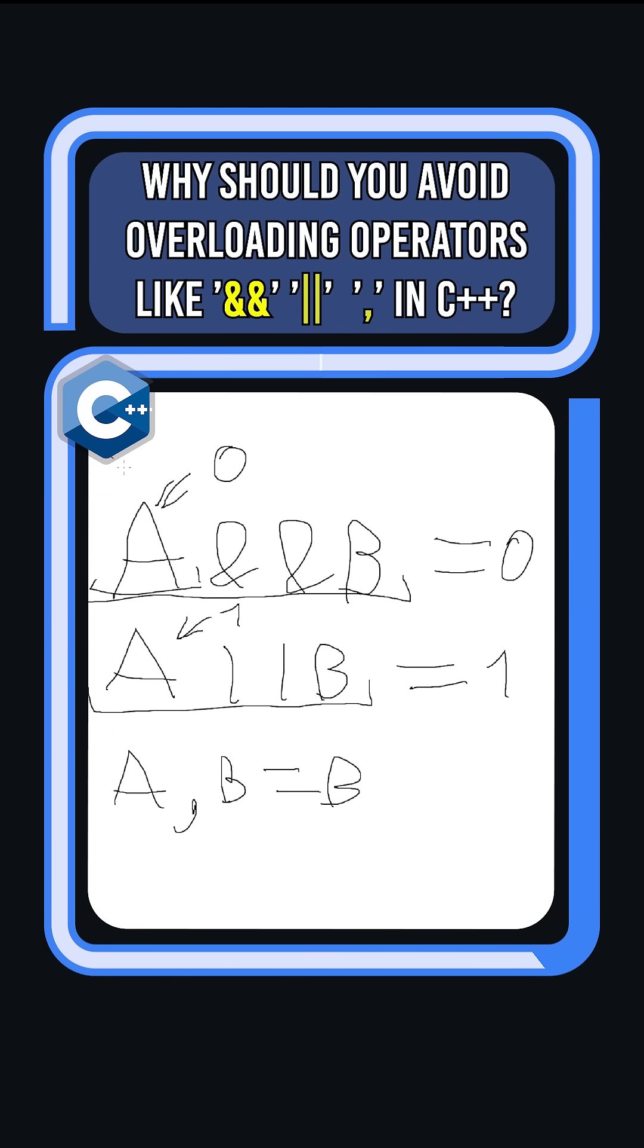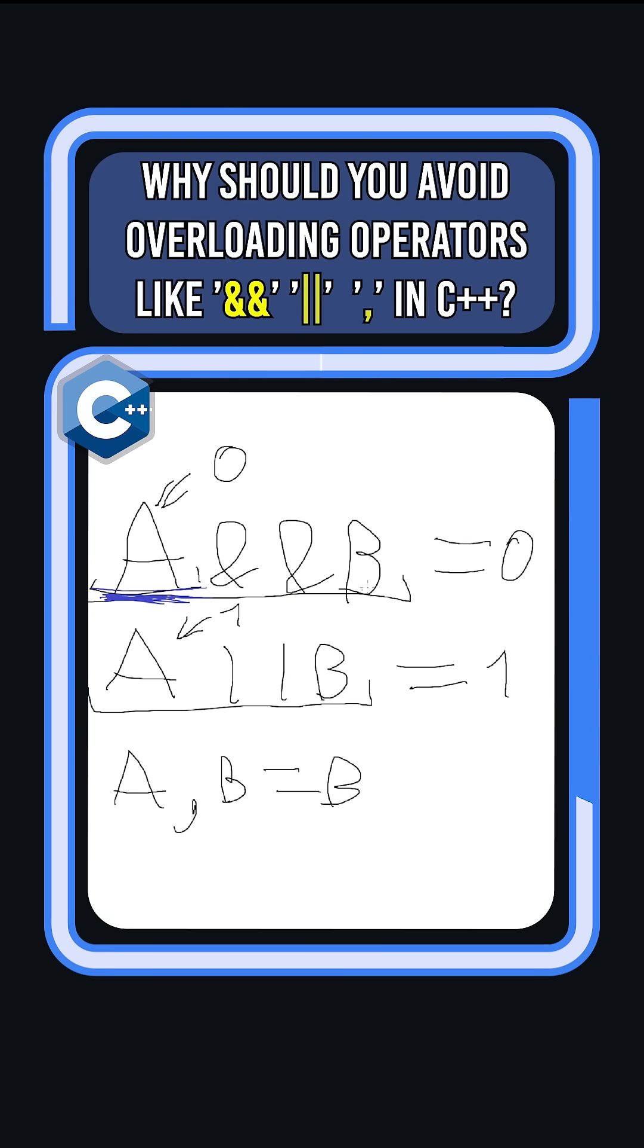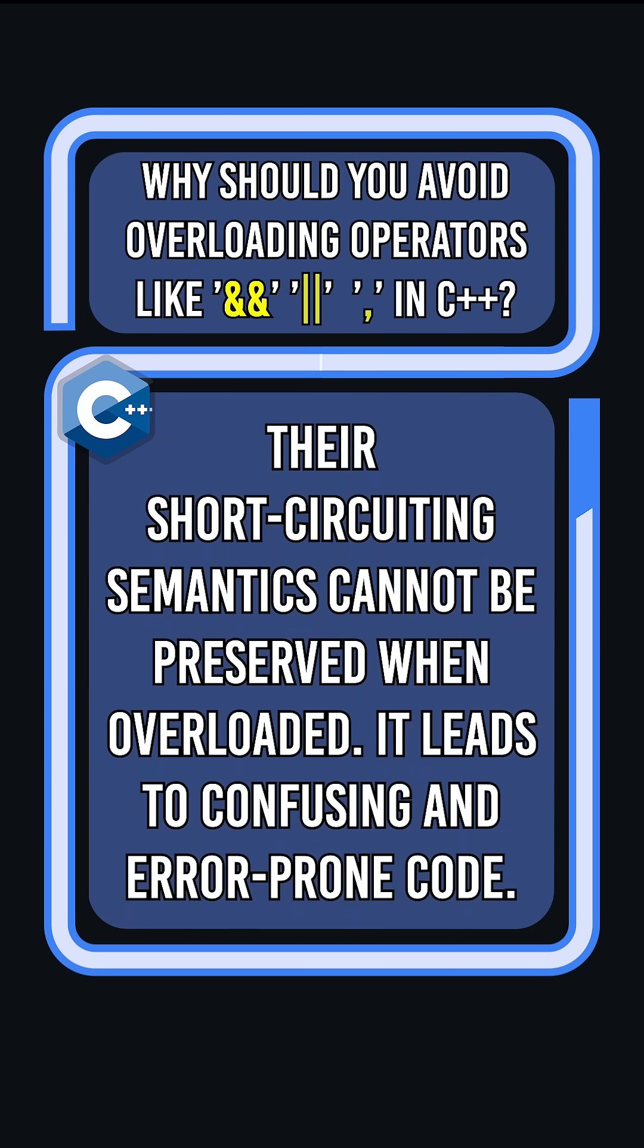But when we overload them, they are being processed like a function call. Left operand A and right operand B will be evaluated, losing their short-circuit semantics, leading to incorrect results, bugs, and undefined behavior. So that's why you should avoid overloading such operators in C++.